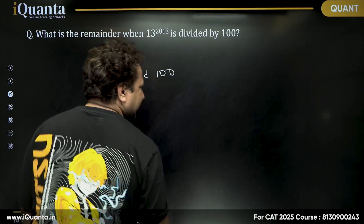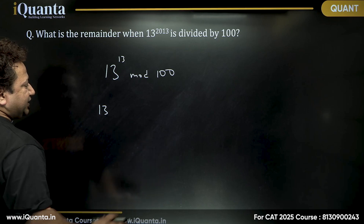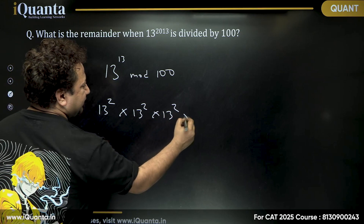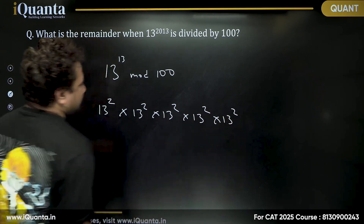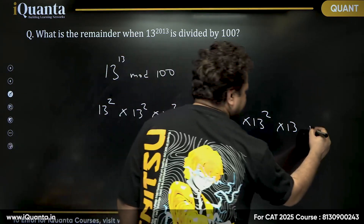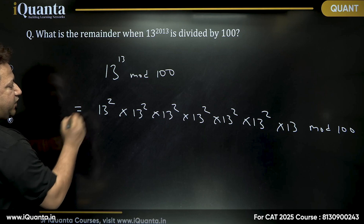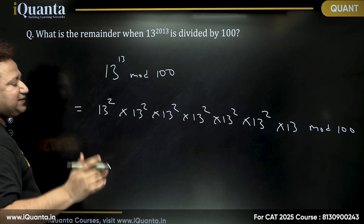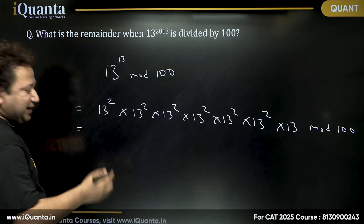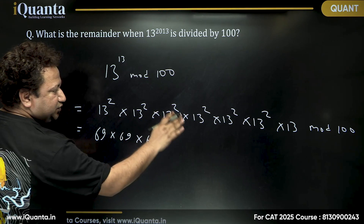We need the last two digits of 13^13. I can write this as 13² × 13² × 13² × 13² × 13² × 13² × 13 — that is six pairs of 13² multiplied together, with one remaining 13. So 13^13 = (13²)^6 × 13.